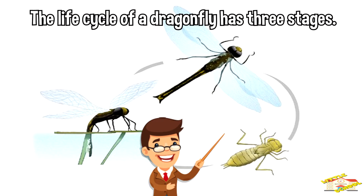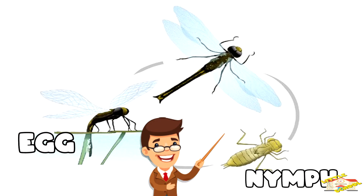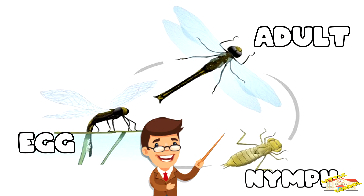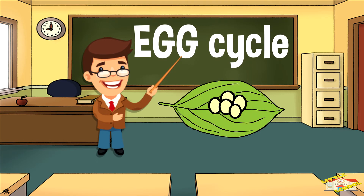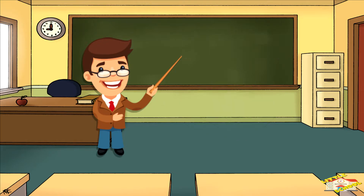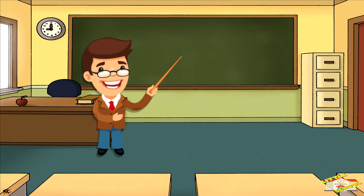The life cycle of a dragonfly has three stages. The first stage is egg, the second is nymph, and the third is the adult phase. Let's start with the egg cycle. The life cycle of a dragonfly starts with eggs.